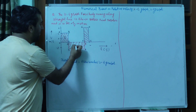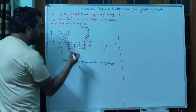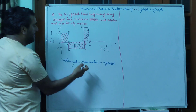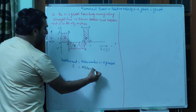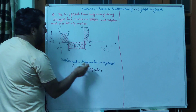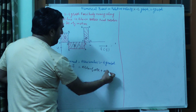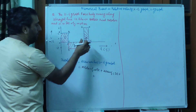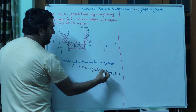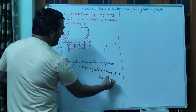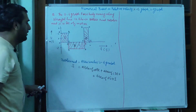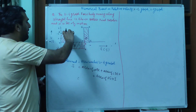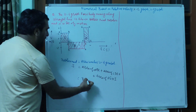ये मैंने इसको 3 parts में divide कर दिया: 1st region, 2nd region, 3rd region। Displacement S is equal to area of region OABC, plus area of region CDEF, plus area of region FGHI। तो area of OABC = length BC into breadth OC। Area of 2nd region = CD into DE। Plus 3rd region का area = GF into FI।